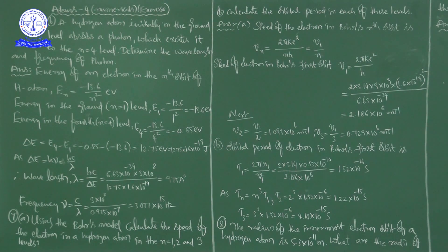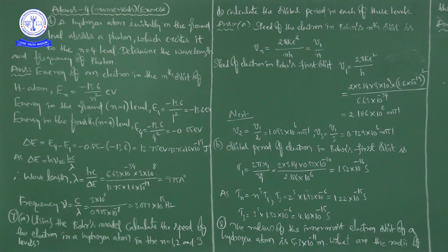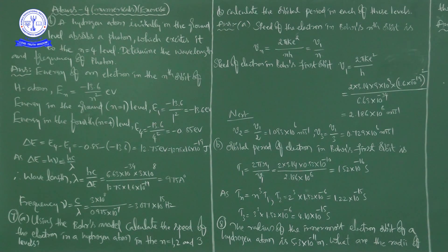The structure of the atom: inside the atom there is a nucleus; in the nucleus there are protons and neutrons. Outside the nucleus there are orbits, and in those orbits the electrons are revolving. This is the key fact from Bohr's theory.